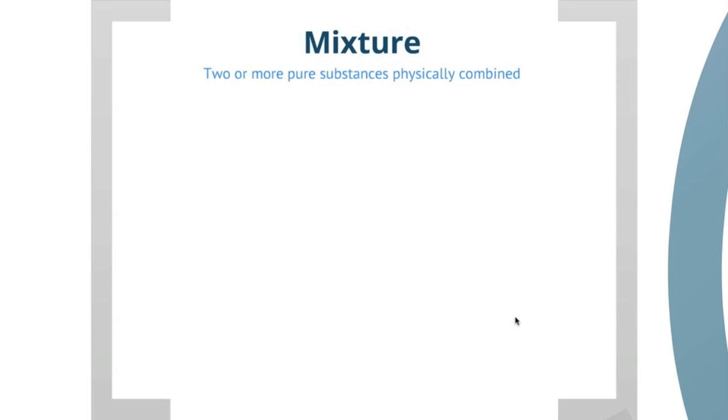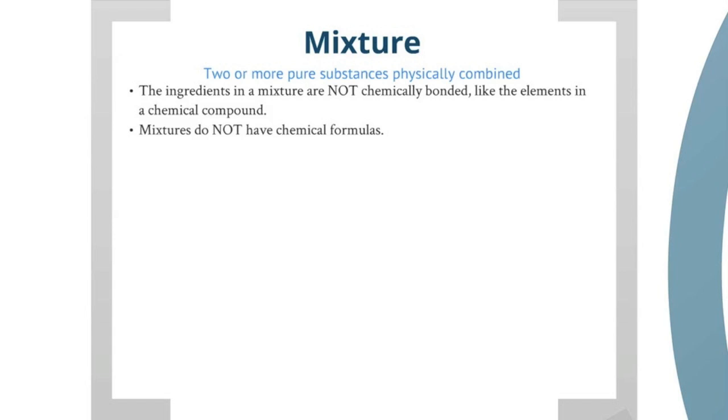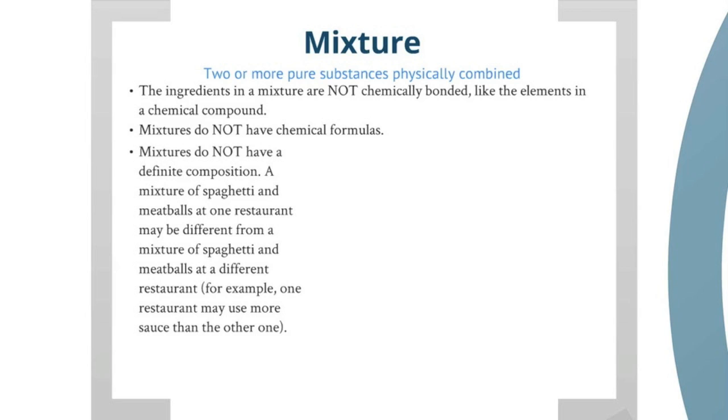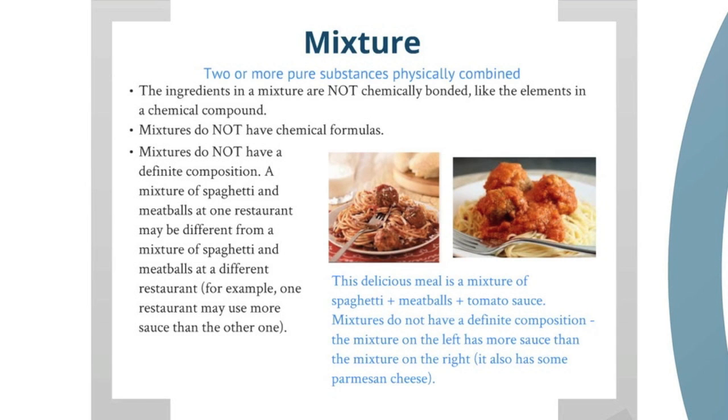Mixtures. Mixtures are two or more pure substances that are physically combined, not chemically combined. There's a big difference. The ingredients in the mixture are not chemically bonded like the elements in a chemical compound. Mixtures do not have chemical formulas, and mixtures do not have a definite composition. A mixture of spaghetti and meatballs at one restaurant may be different from a mixture of spaghetti and meatballs at a different restaurant. For example, one restaurant might use more sauce than the other one. The restaurant on the left uses more sauce than they did on the right, so this mixture is not the exact same as this mixture over here.